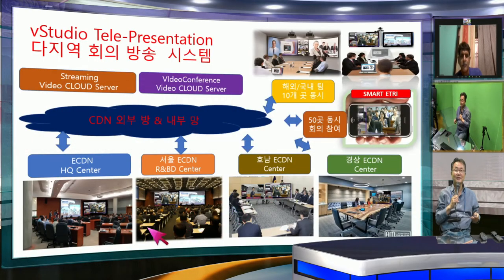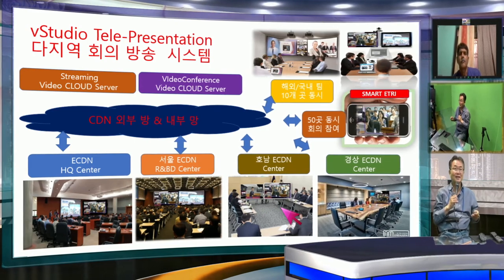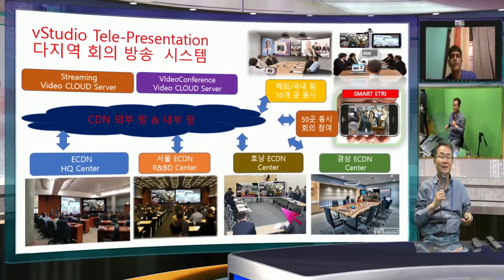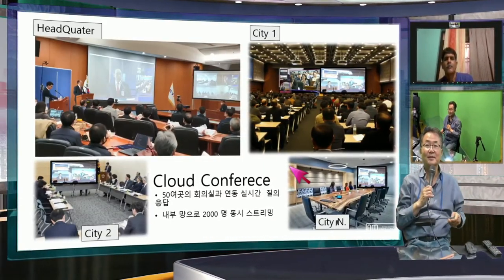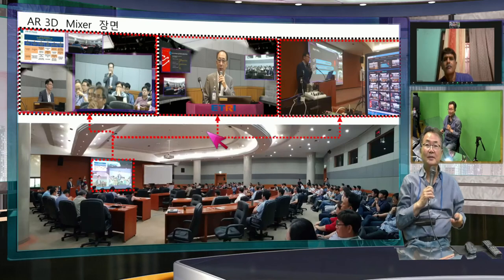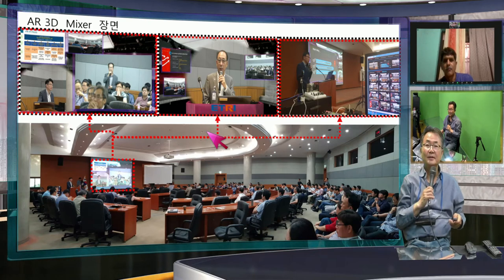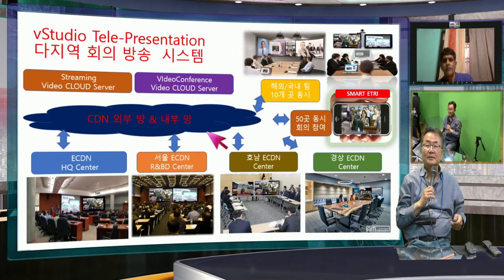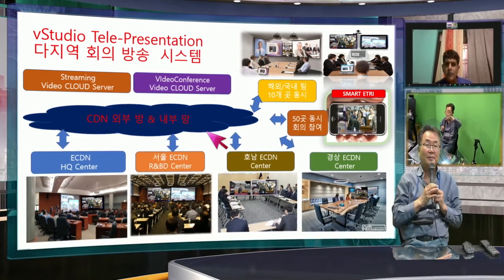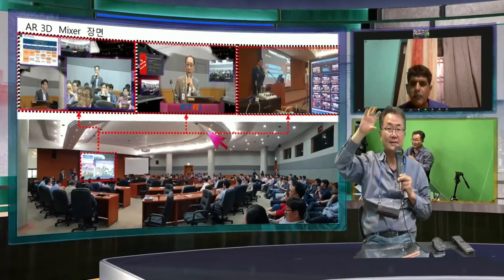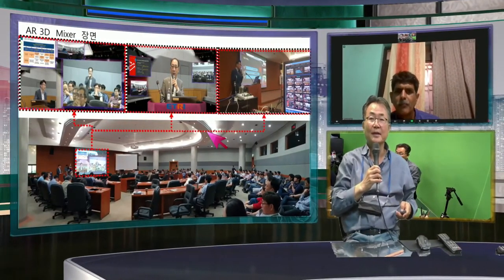They have four different offices where director-level people sit watching the presentation, making questions and answers while broadcasting to all other people. They use chroma key to make presentations like I'm doing, and this video goes to four different areas of their institute in different cities. People there also join through conference. When an institute person makes a question, their camera shows here together with everyone. They use a Wowza server for streaming — from one place to another — because this institute doesn't allow YouTube use.